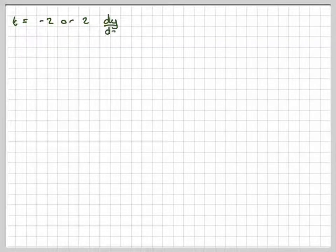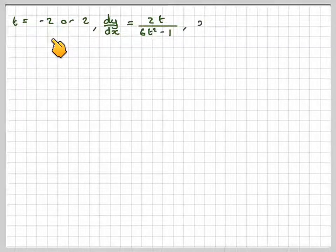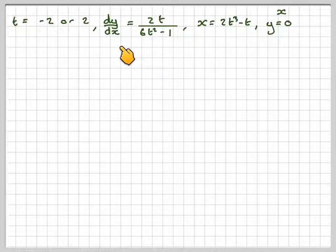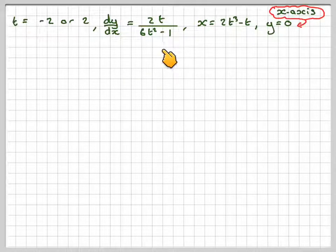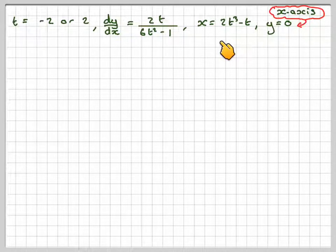So we've got the following information: two values of t, minus 2 and 2. We've got dy by dx is 2t over (6t squared minus 1). The x value is 2t cubed minus t, and we know the y value is 0 because we're cutting the x-axis.